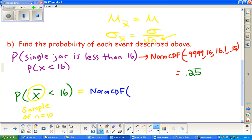Same setup - it's still from negative 9999 up to 16. The mean is still 16.1, the same mean as before. Now the standard deviation, we just need to take the 0.15 and divide it by the square root of our sample size, which is 10. That's going to be the only difference - whatever the sample size is, we divide by the square root of it.